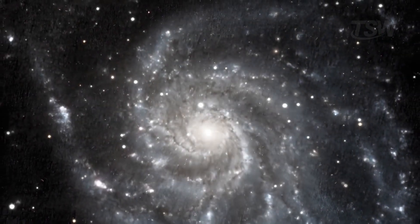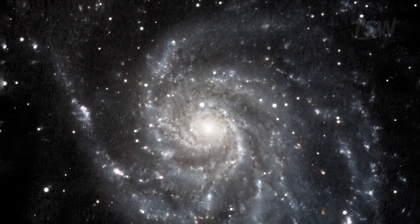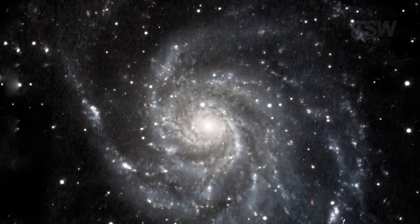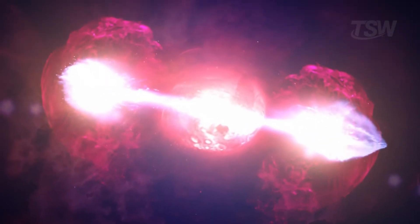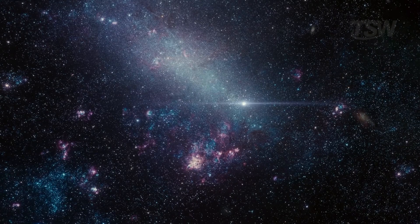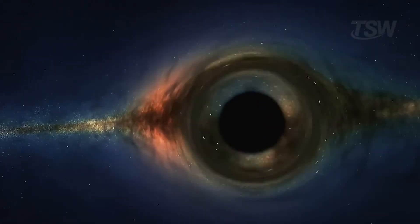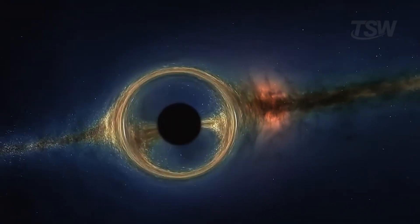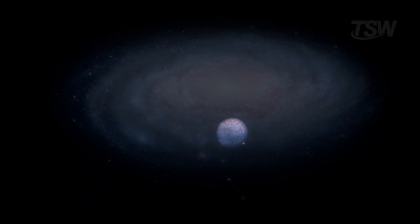Seen from the outside, the Milky Way doesn't stand out for anything extravagant. It's a classic, mature spiral, generally calm. Here, supernova explosions aren't an everyday spectacle. On average, one per century. That keeps extreme environments rare, like regions packed with stellar-mass black holes or neutron stars. And around our solar system, practically non-existent.